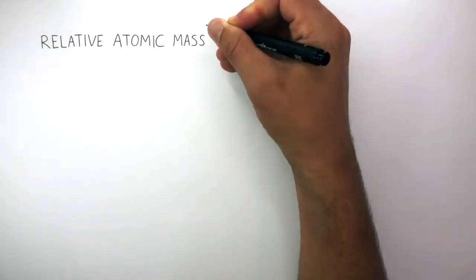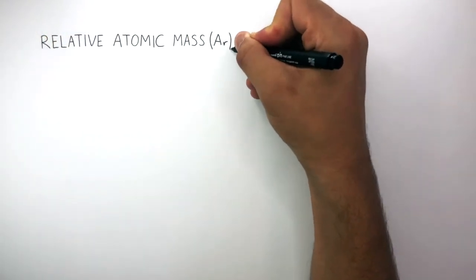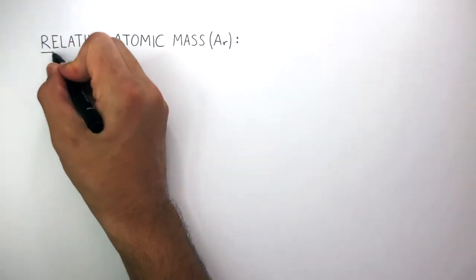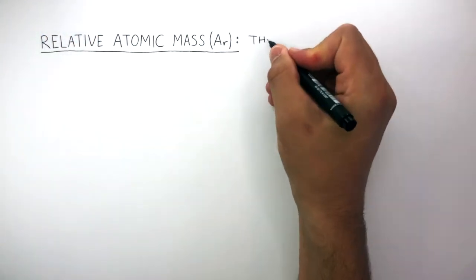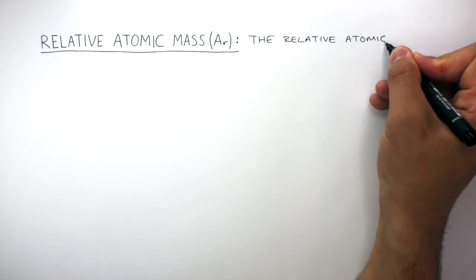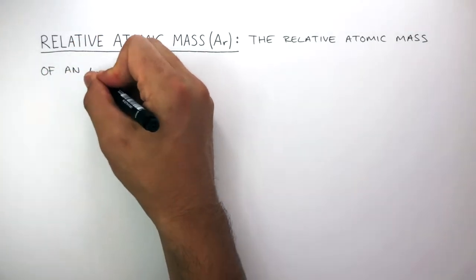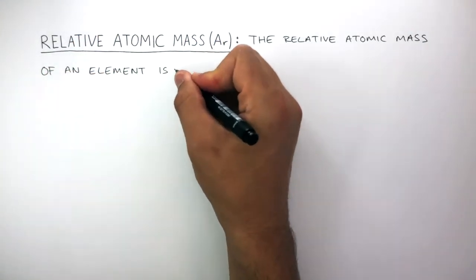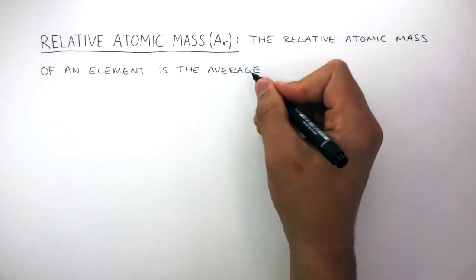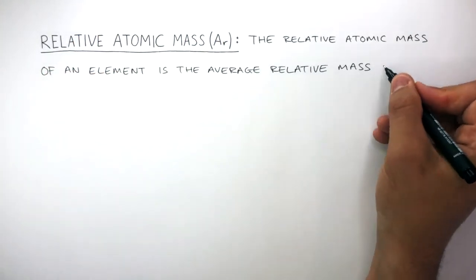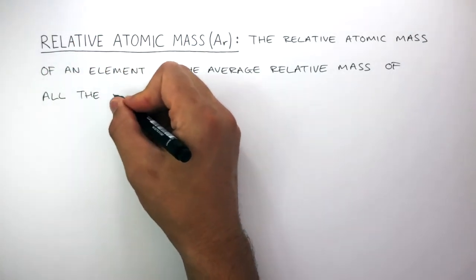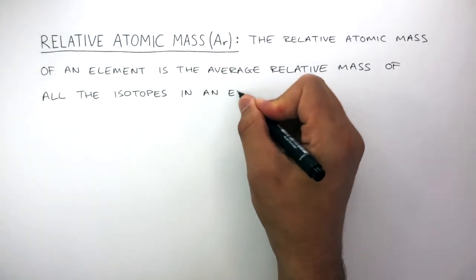Relative Atomic Mass, or AR for short, can be defined as: the relative atomic mass of an element is the average relative mass of all the isotopes in an element.